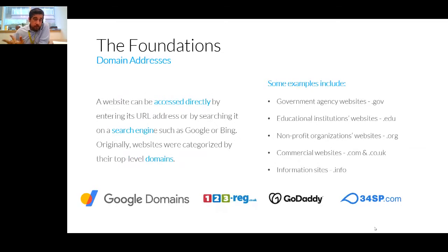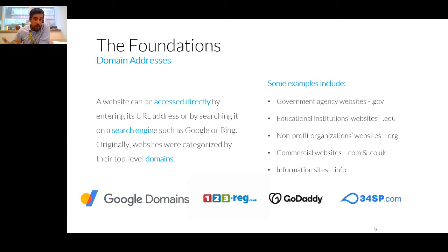Looking at your domain — this is the actual URL, the address that people find your website when they type it into the address bar. Examples: .gov is government, .edu is education, non-profits go under .org, commercial websites use .com and .co.uk. There's a broad range of additional ones: .shop, .mobile, and all sorts. You can obtain domains through Google, 123, GoDaddy, 34SP. In terms of pricing, you can be looking anywhere from two or three pounds up to thousands of pounds per year, depending on how active the keyword or term is.